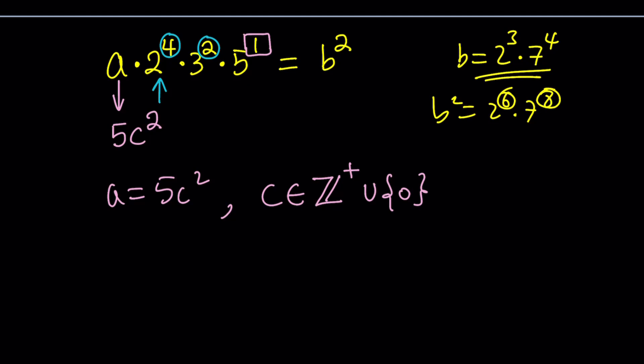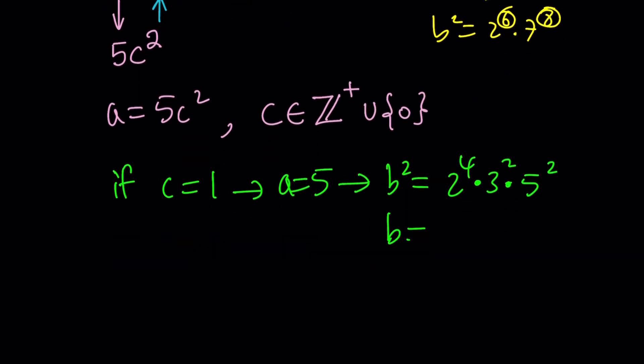So a equals 5C squared is a solution. What does that mean? It means that if, for example, C equals 1, then we get a equals 5, and if a is equal to 5, notice that we get something like this. B squared becomes 2 to the 4th, 3 to the 2nd, and 5 to the 2nd. Remember, I was telling you that we need at least one 5, and that complements the picture.